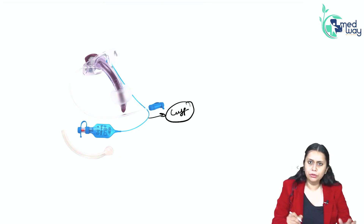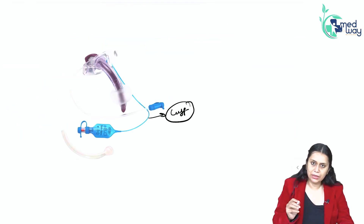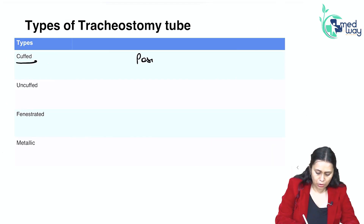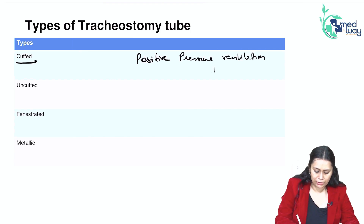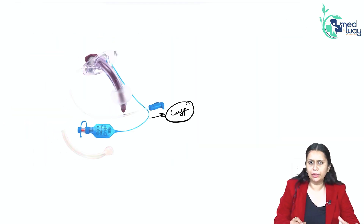We have the cuffed tracheostomy tube, as you can see here. This is used for positive pressure ventilation — for patients on a ventilator in the ICU. When we have to go for long-term mechanical ventilation, we change the cuffed endotracheal tube to a cuffed tracheostomy tube.